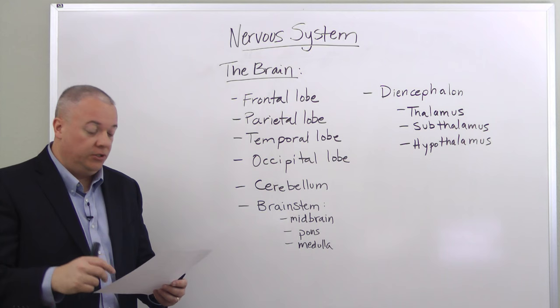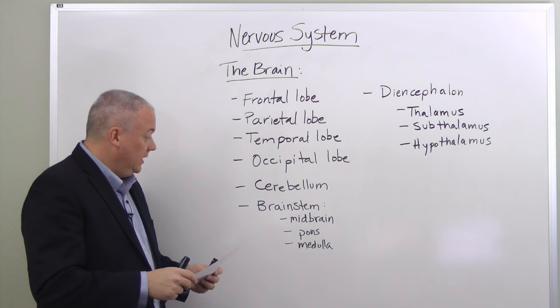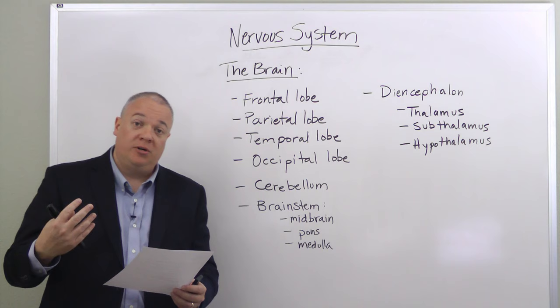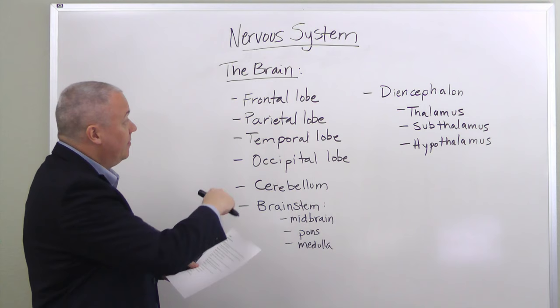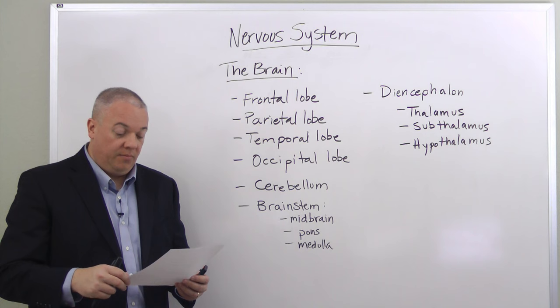The temporal lobe is responsible for hearing, auditory information, and language comprehension. The occipital lobe is the center for visual information. The cerebellum coordinates all muscle function. The brain stem — containing the midbrain, pons, and medulla — governs breathing, respiration, the cardiac center, and all nerve pathways to the brain pass through it.